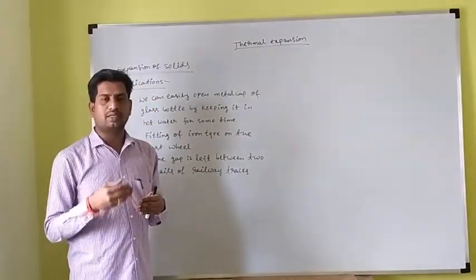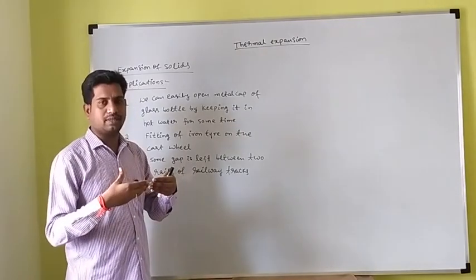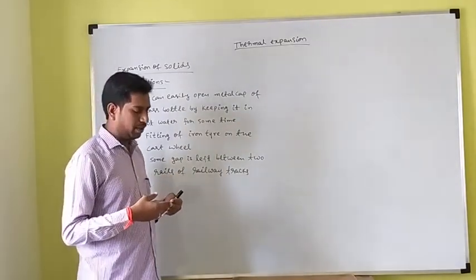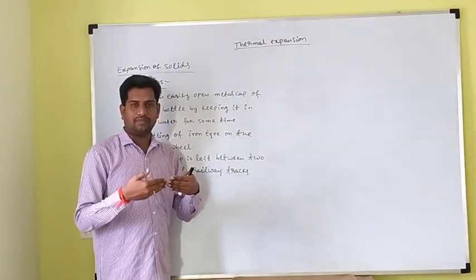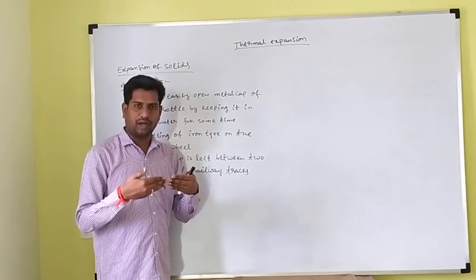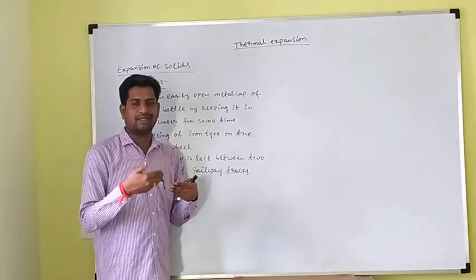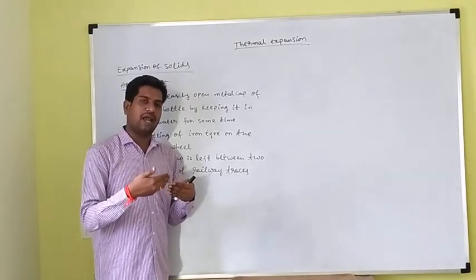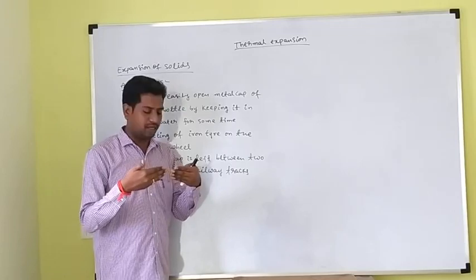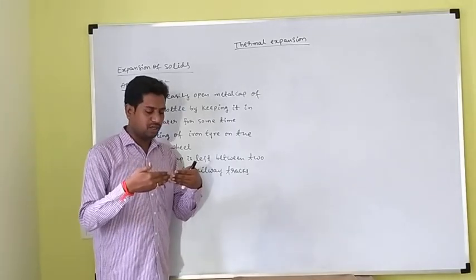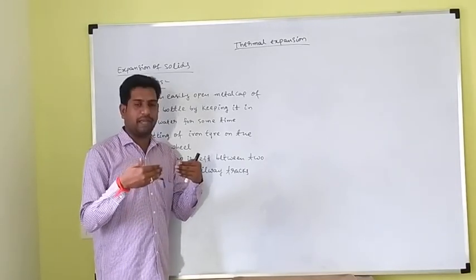If this gap is not there and the rails are fixed end to end, when the temperature increases the rods will expand. When both rods expand there is no room for expansion, so the rod will bend. To avoid this bending of rods, some gap is left.